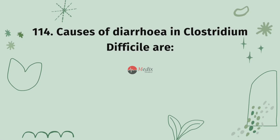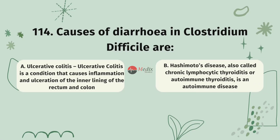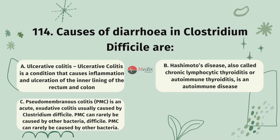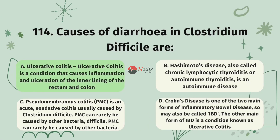Question 114. Causes of diarrhea in Clostridium difficile: Option A, ulcerative colitis — a condition causing inflammation and ulceration of the inner lining of the rectum and colon. Option B, Hashimoto's disease, an autoimmune thyroid condition. Option C, pseudomembranous colitis — an acute exudative colitis usually caused by Clostridium difficile; PMC can rarely be caused by other bacteria. Option D, Crohn's disease, one of the two main forms of inflammatory bowel disease. The correct answer is C.